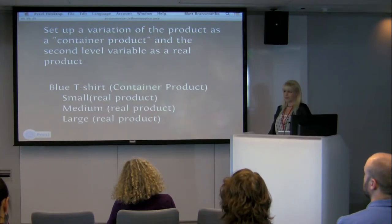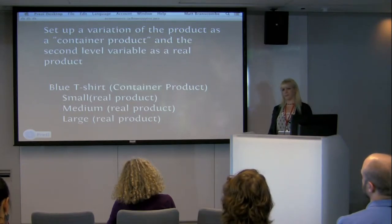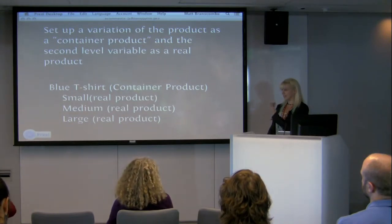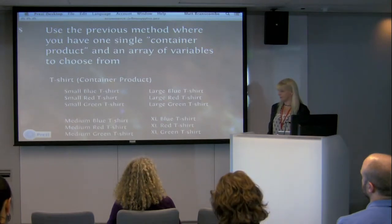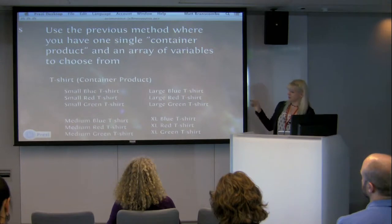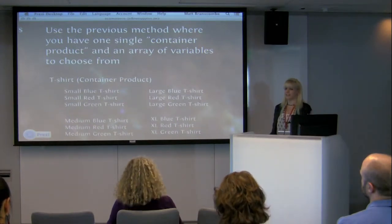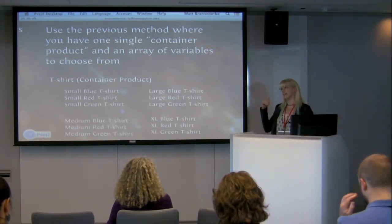There are clients where this doesn't work — if they want a simplistic store where people see one product with the same description, same everything except for color and size. Then the next method would work, which is more of a grid — almost nested variables, or an array of variables. You've got your one product, the t-shirt, and you would have small blue, small red, small green, large blue, large red, large green. Usually these are represented in a grid and the customer can choose quantities of which ones, or they're a nested select list.